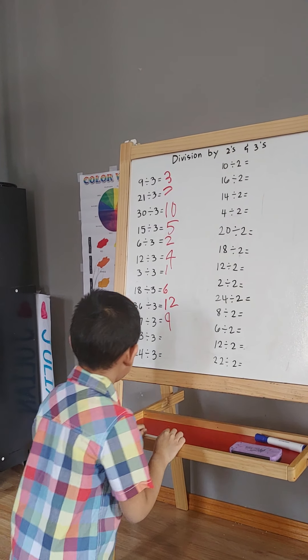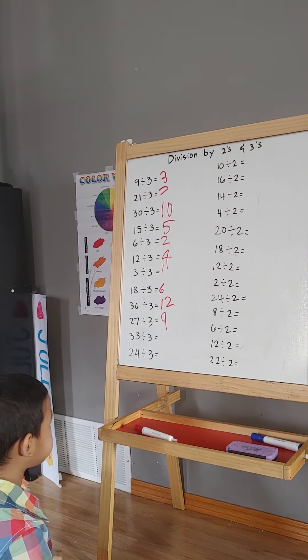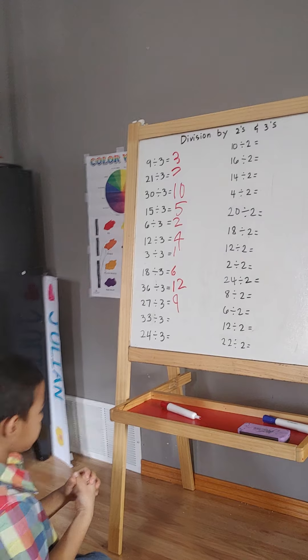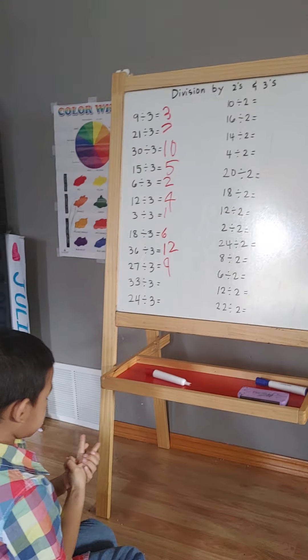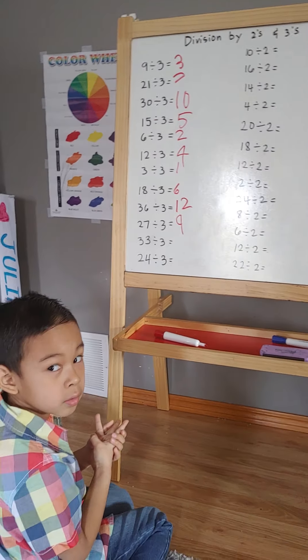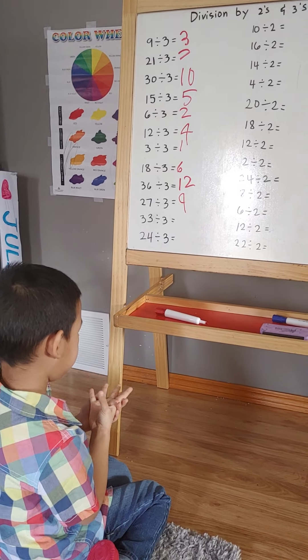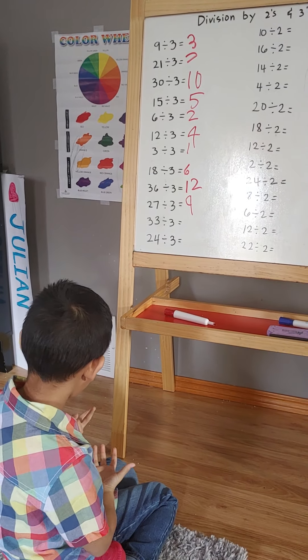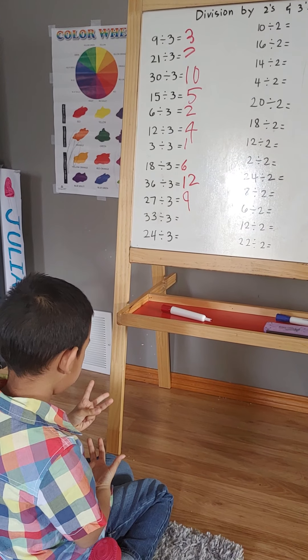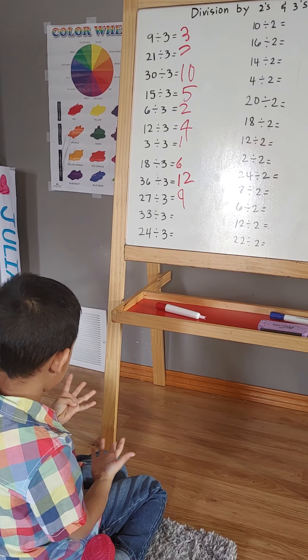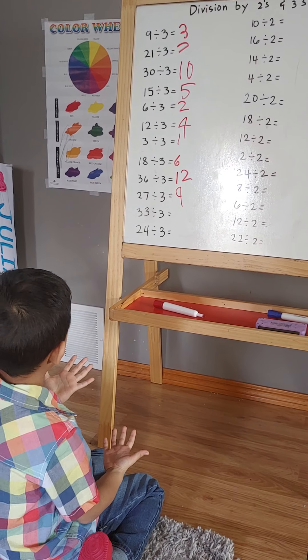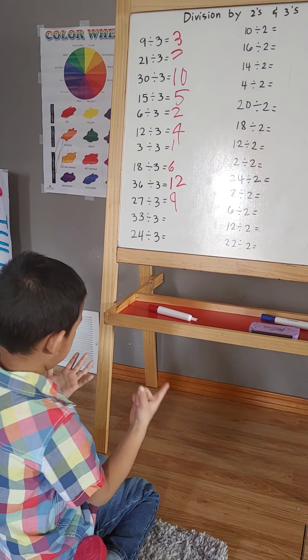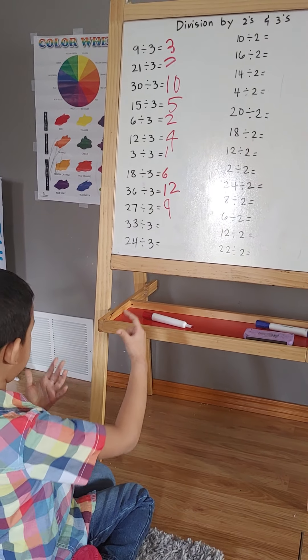6 divided by 3. 3, 6, 9, 12, 15, 18, 21, 24, 27, 30, 33. So it is 11.